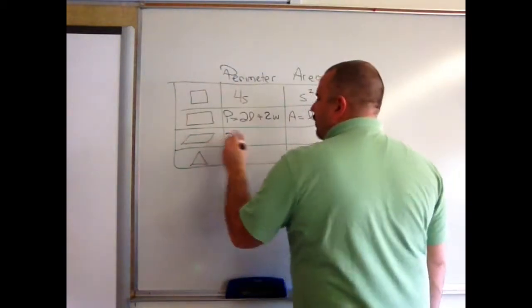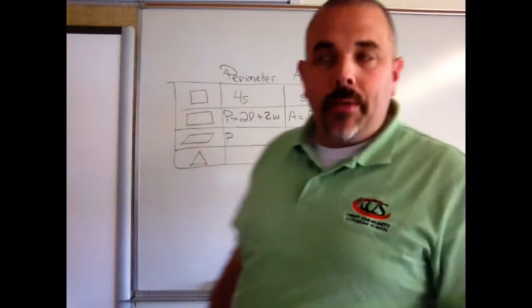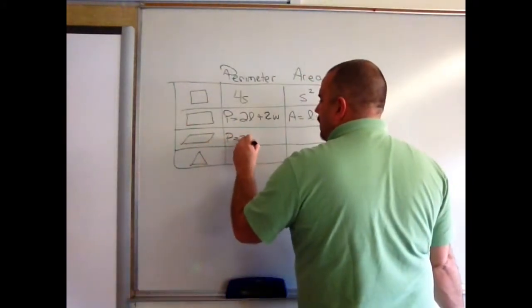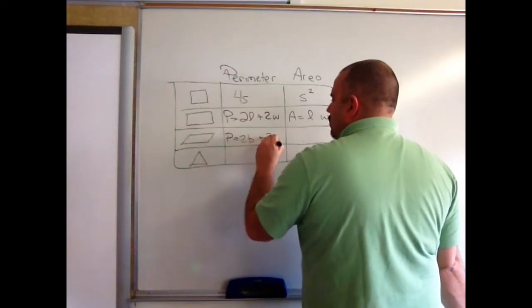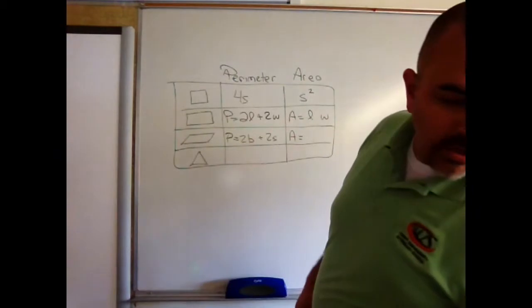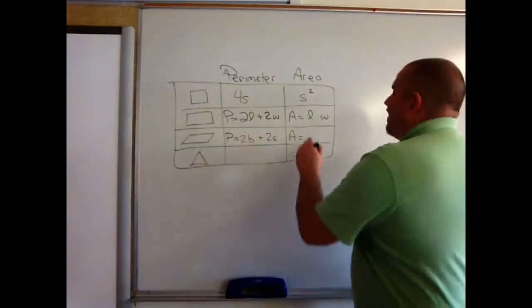What about the perimeter for the parallelogram? The perimeter for the parallelogram is a little bit different. That's 2 times your base plus 2 times your side. And your area in this case is also equal to base times height.